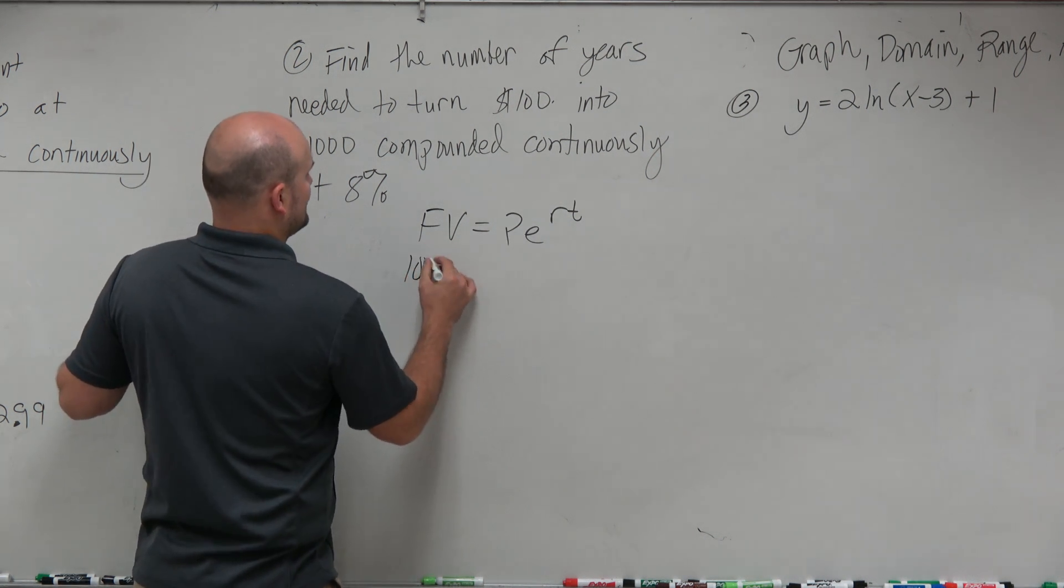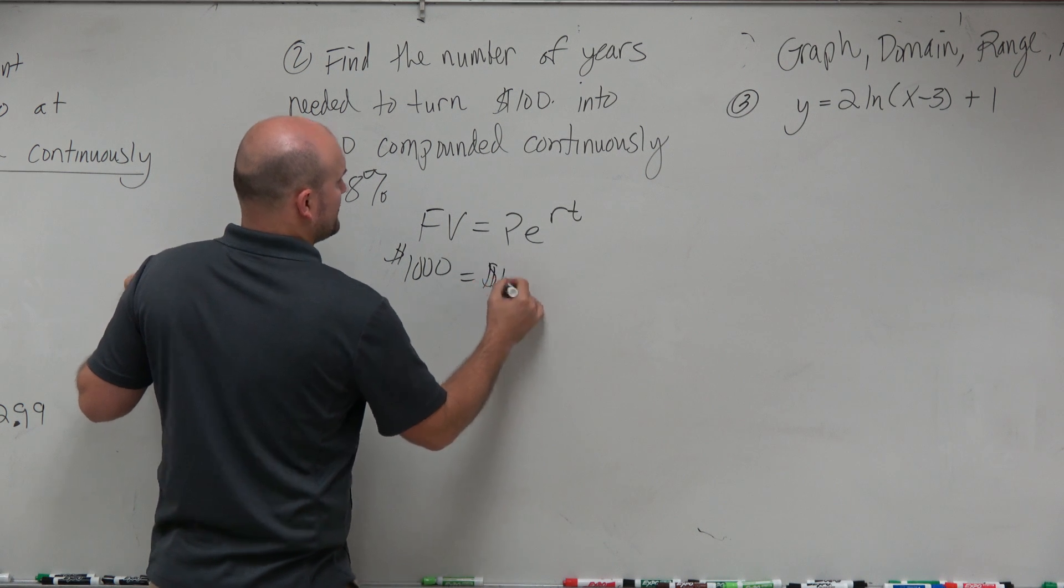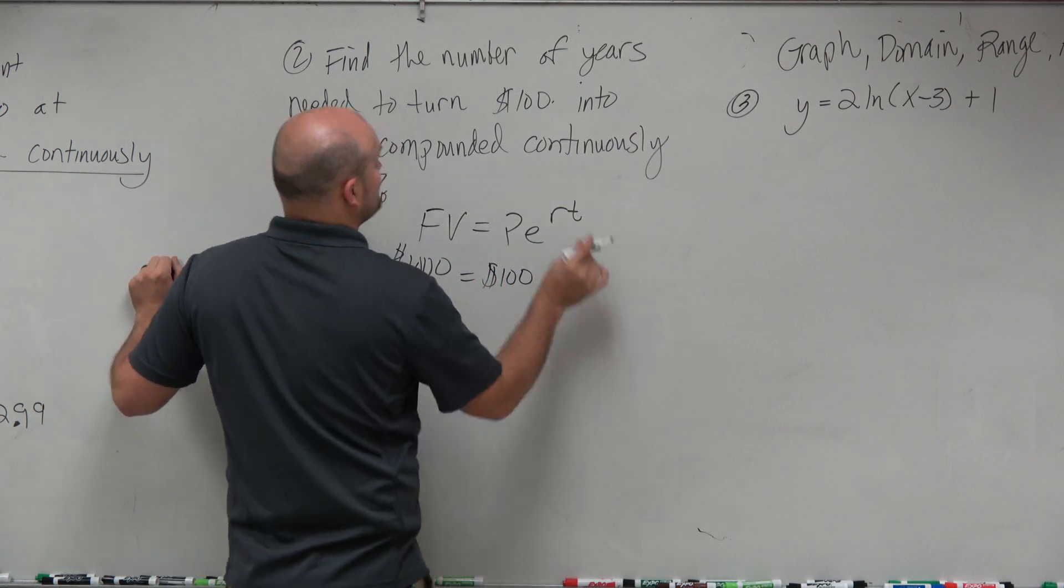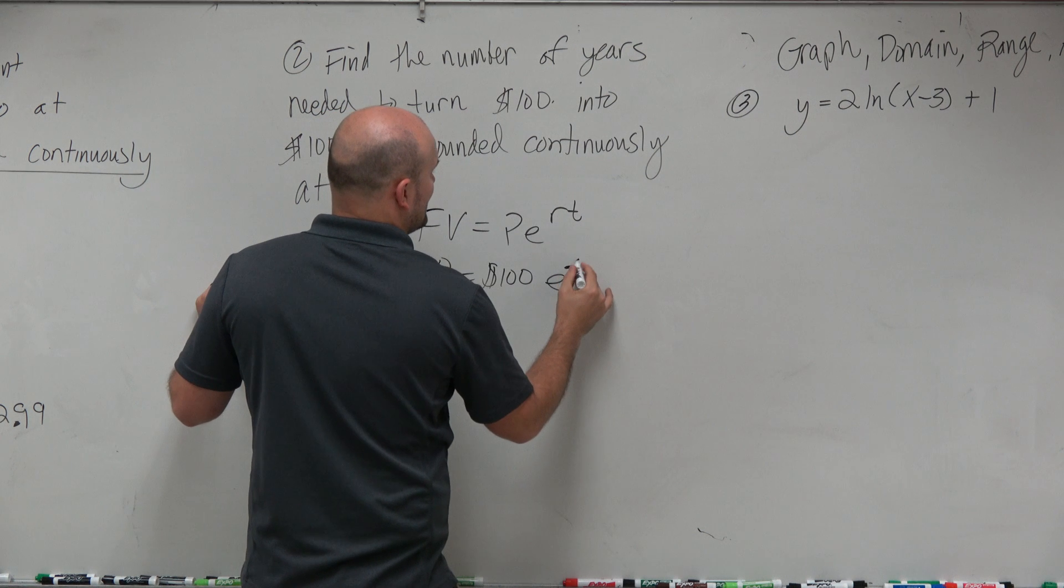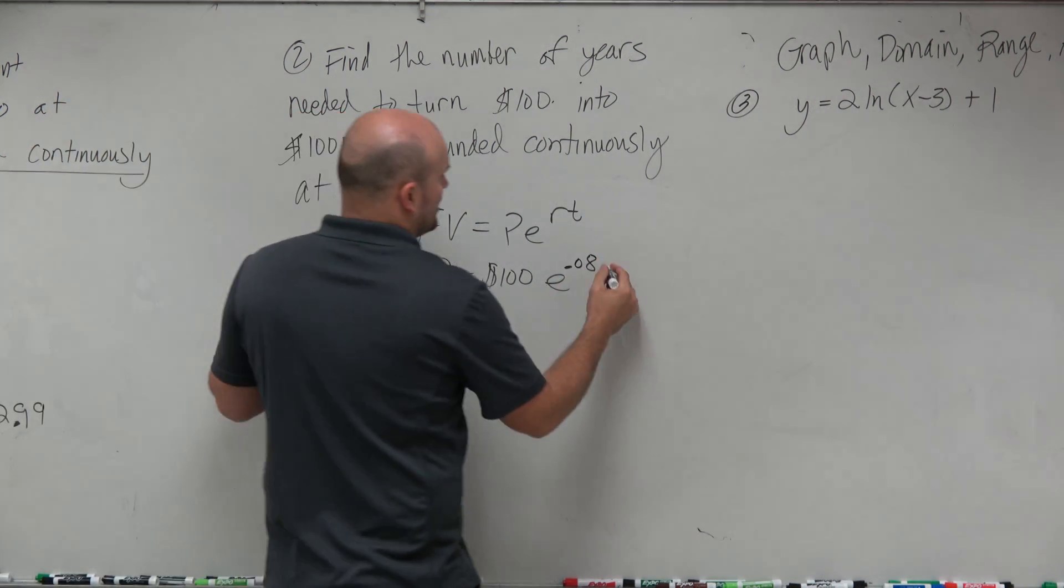So for a future value, I'll put in $1,000 equals $100 times E to my rate, which is 0.08. Make sure when you're doing your rates, you're putting them in decimal form, and then we're trying to solve for T.